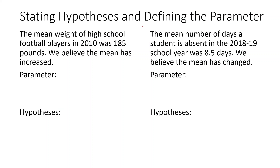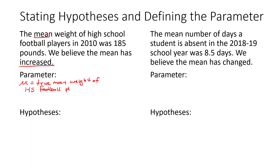Alright, so stating hypotheses and defining the parameter. We're talking about the mean weight of high school football players — in 2010 it was 185 pounds, and we believe the mean has increased. The parameter we're talking about is the mean, so we're going to define what that mean is. In this case it is the true mean weight of high school football players.